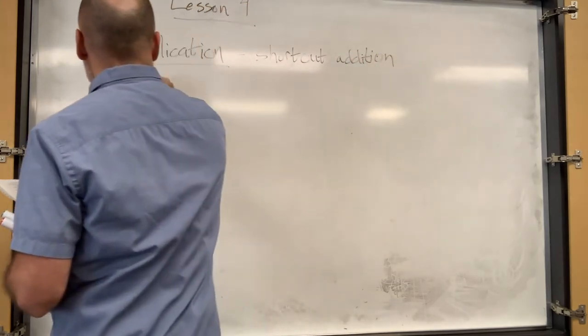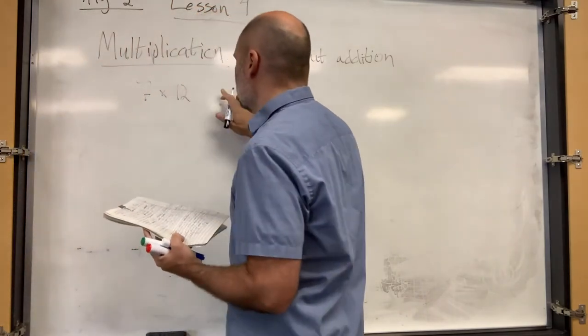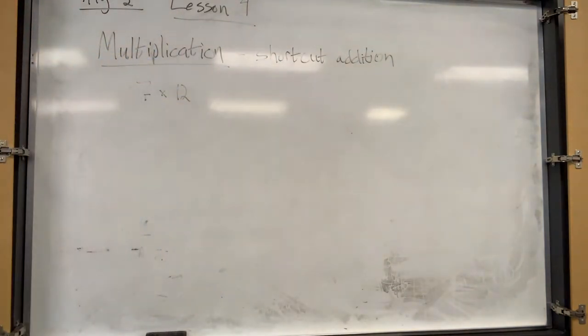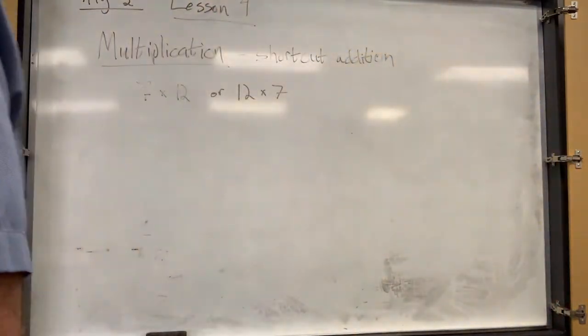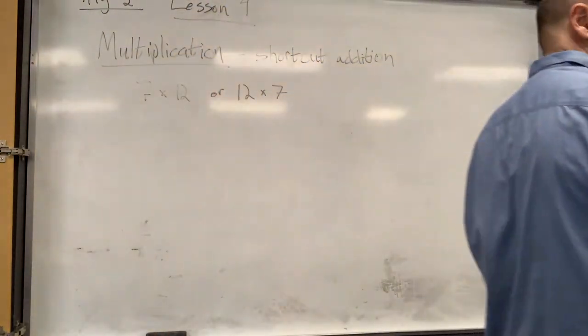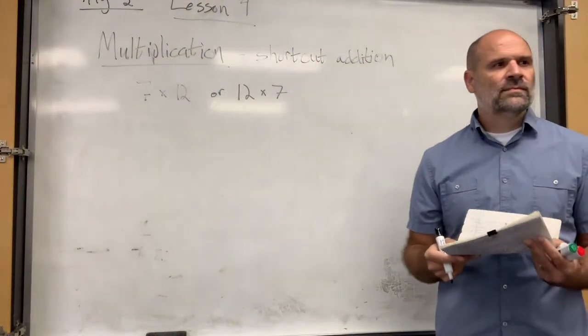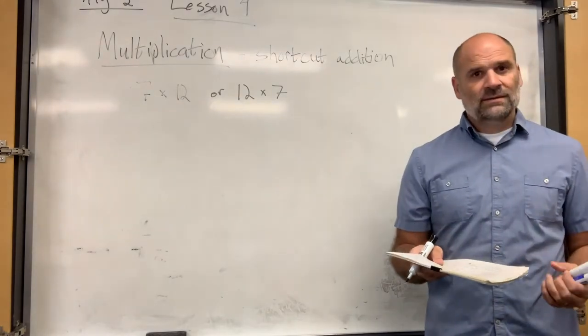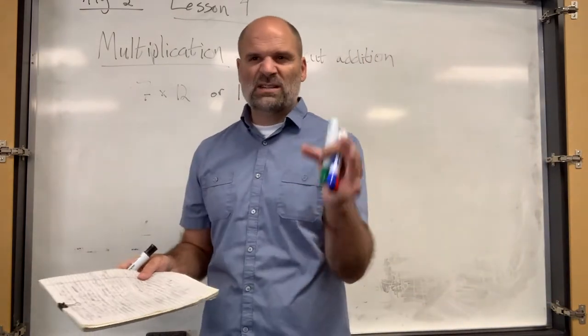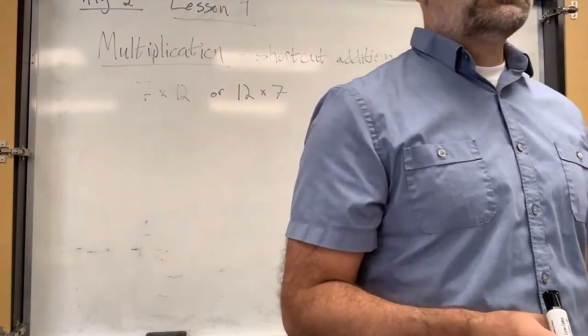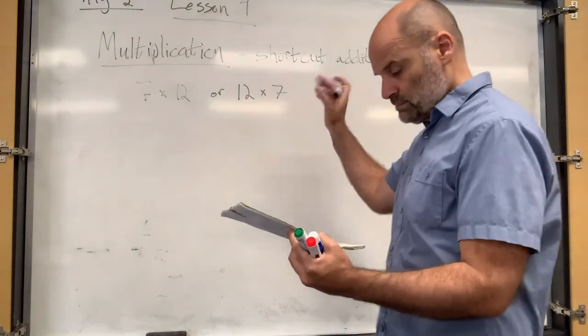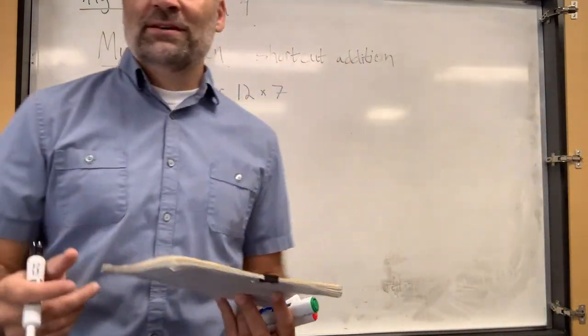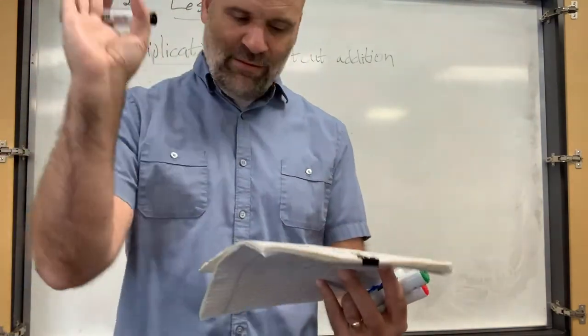So seven times twelve is you're adding seven twelve times or you're adding twelve seven times. It means the same thing. So adding seven times twelve, this is reversible. Do you remember what that property is called when you can reverse something? Commutative, that's right. So multiplication is commutative. Communism is kind of similar. Like, everything's the same, right? Never mind. We're not talking about communism.